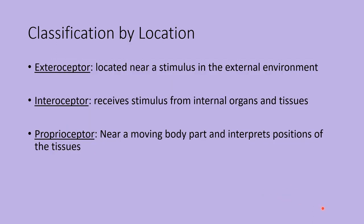You can also classify receptors according to location. Exteroceptors are typically located near the stimulus and pick up the external environment, so many are located in the skin. Interoceptors receive a stimulus from your internal organs and internal tissues. Proprioceptors are near a moving body part and help interpret movements or positions of the tissues — they are often found in your joints.